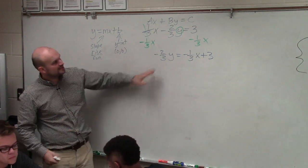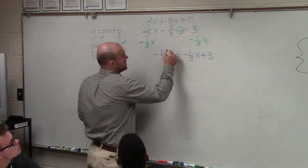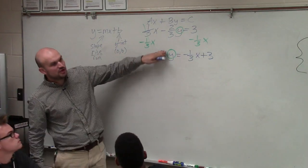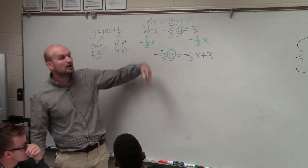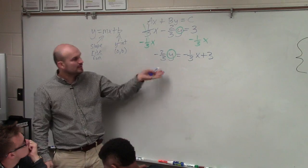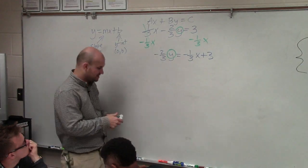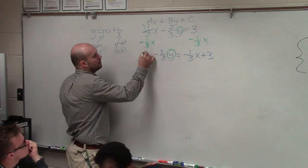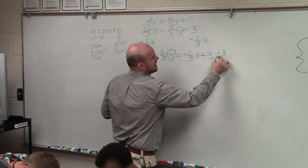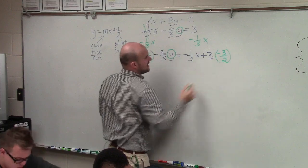So now what we need to do is, again, we need to look at our y and say, all right, now what is happening to my variable? Well, my variable is being multiplied by negative two-thirds. So to undo multiplying by negative two-thirds, we need to divide by negative two-thirds, right? But we don't divide fractions. Instead of dividing fractions, we multiply by the reciprocal. So I multiply by negative three-halves on both sides.